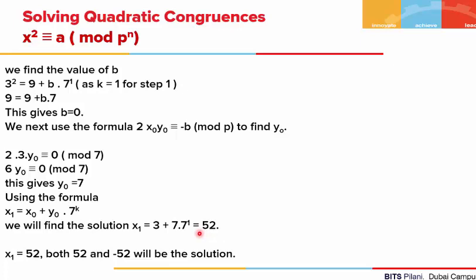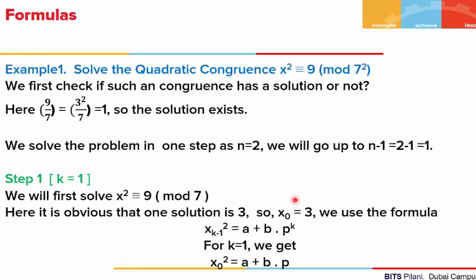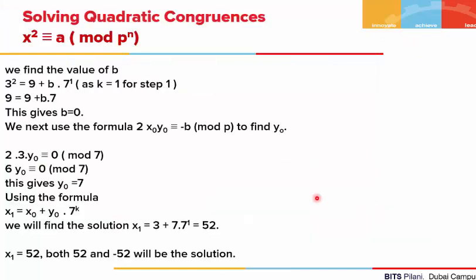52 is the final answer. Since our power was 2, we have done only one step. If 52 is one of the solutions, then −52 will also be a solution. We can verify: substituting x = 52, we find 52² − 9 is divisible by 49. So you can always check whether your answer is correct or not.